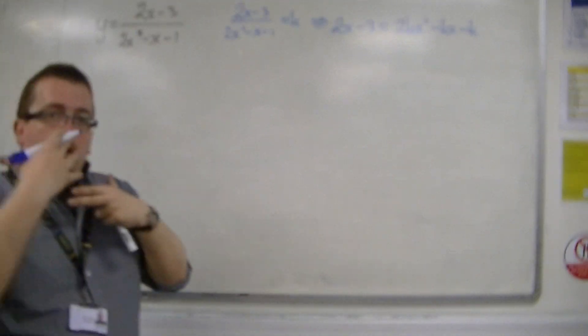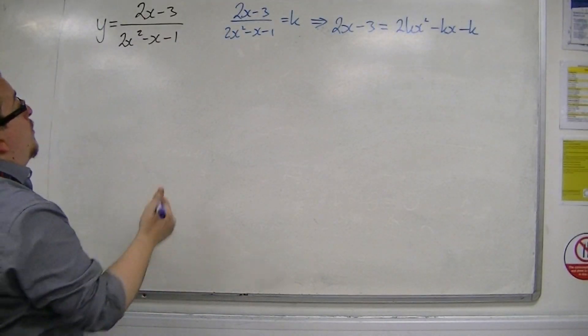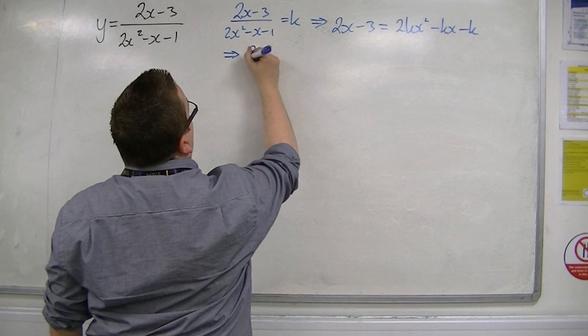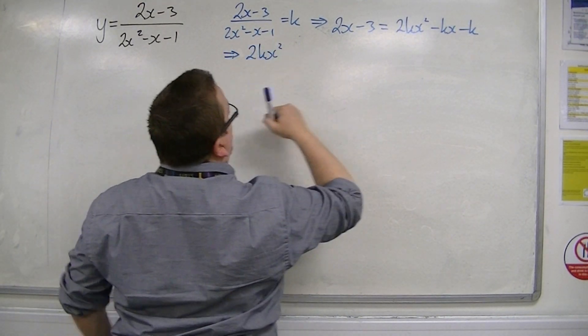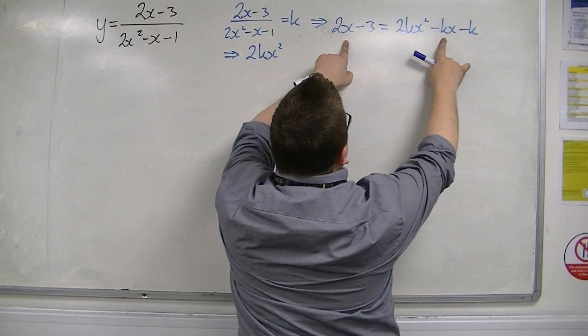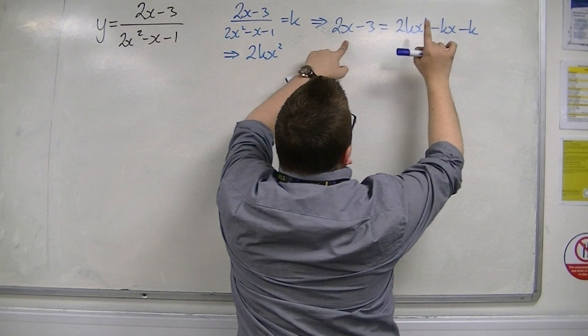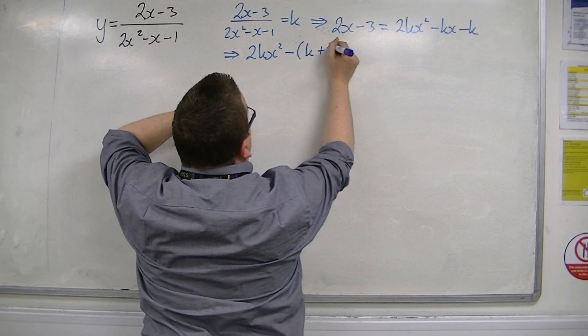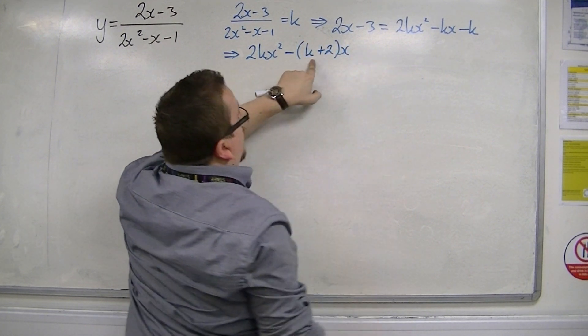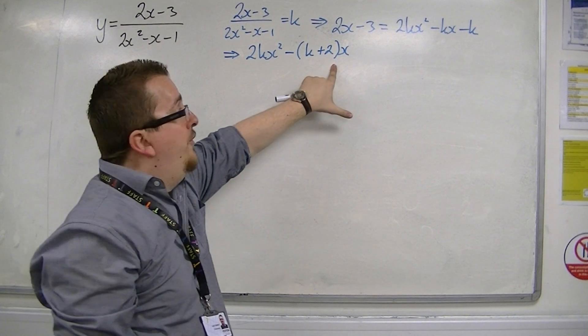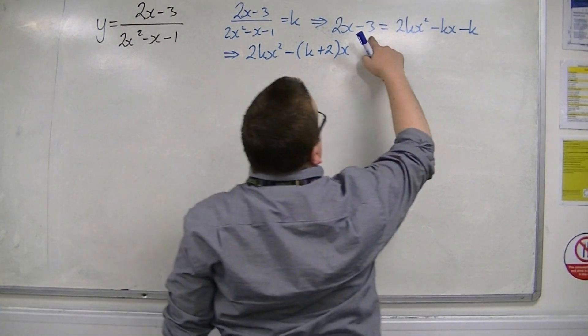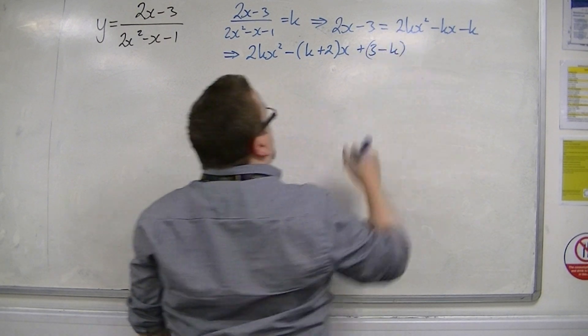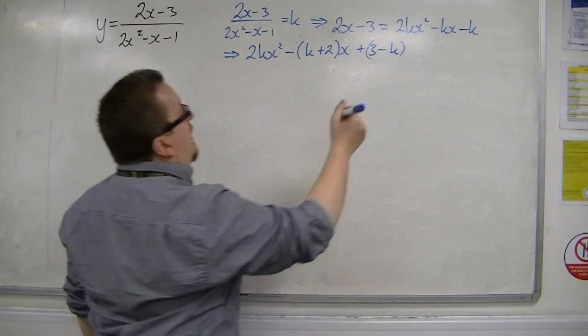From there you're going to want to put everything onto one side of the equation. So I'm going to put everything onto the right hand side. So we're going to have 2kx squared. Now I'm going to take 2x from both sides, so I'm going to have take away k plus 2x, because that incorporates the minus kx and the minus 2x. And I've also got, adding 3 to both sides, so I've got plus 3 minus k. And that's going to be equal to 0.